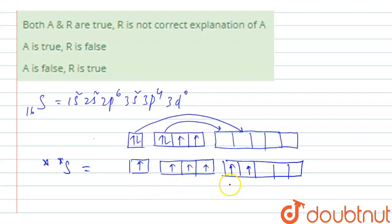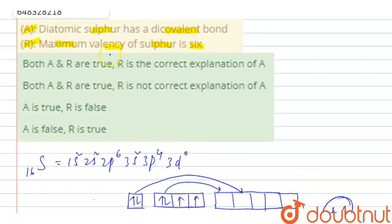Therefore, 6 half-filled orbitals. So it has a maximum oxidation state of plus 6. Therefore, here the reason is true one.